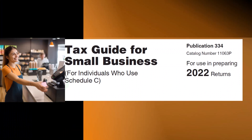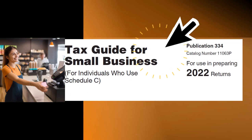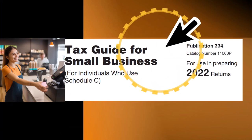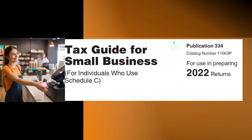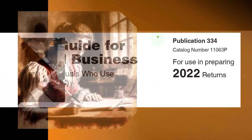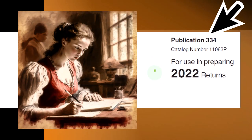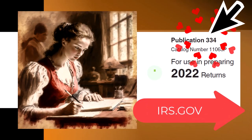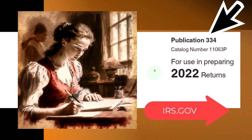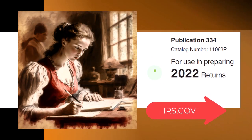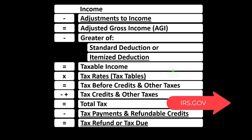Most of this information comes from the Tax Guide for Small Business for individuals who use Schedule C, Publication 334, Tax Year 2022. You can find it on the IRS website, irs.gov.